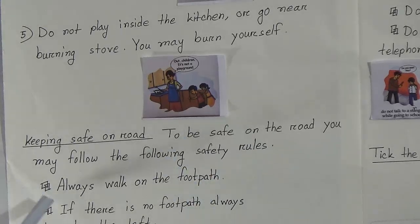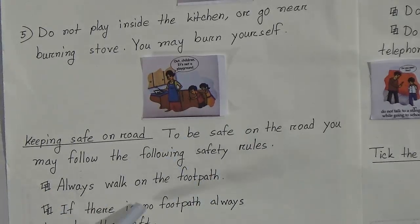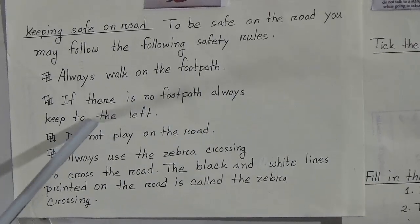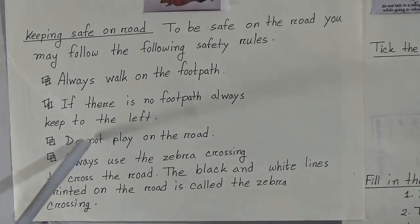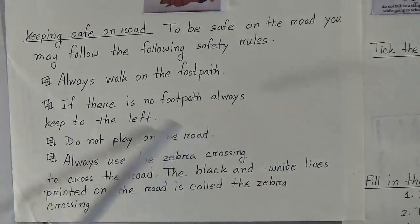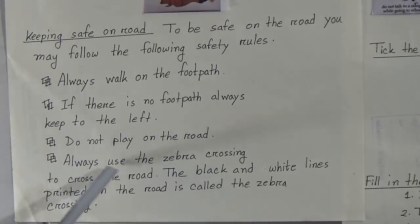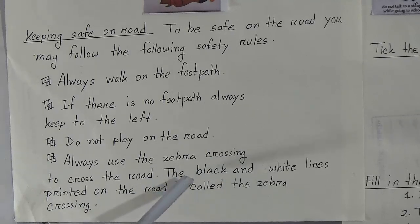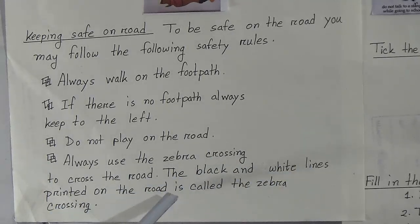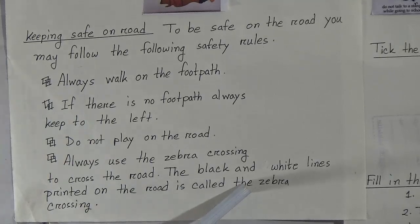Next topic is keeping safe on the road. To be safe on the road, you may follow the following safety rules. First: always walk on the footpath. Next: if there is no footpath, always keep to the left. Next: do not play on the road. Last: always use the zebra crossing to cross the road. The black and white lines printed on the road are called the zebra crossing.